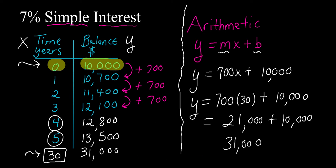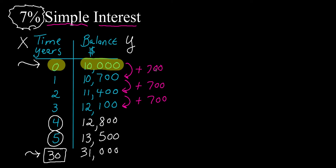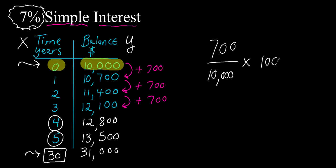That's how simple interest works. Let me quickly explain where the seven percent comes into play. If you take the common difference — the amount the balance is growing by each year, which is seven hundred — and divide it by the initial balance at time zero, which is ten thousand, then multiply by one hundred to convert to a percent, you get seven percent. So seven hundred divided by ten thousand times one hundred equals seven percent.